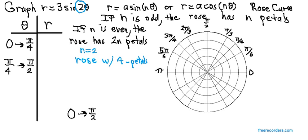but with rose curves, what we do is we take the numbers we normally plug in and divide them by n or multiply them by 1 over n. So here, 1 over n is 1 over 2.